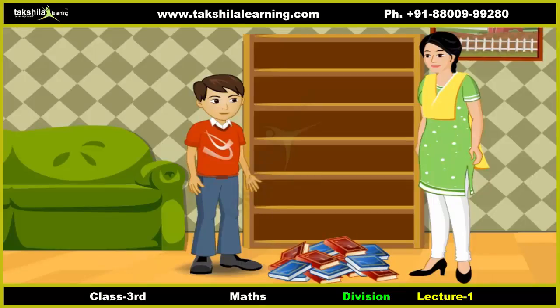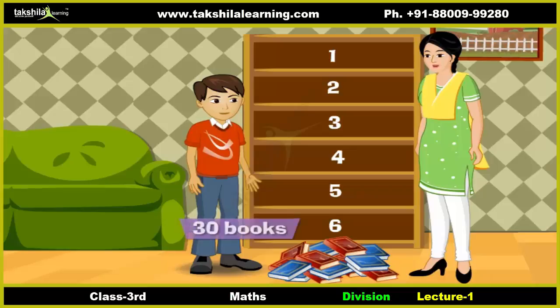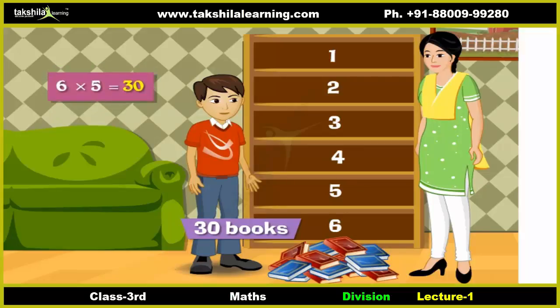Look at this bookshelf. There are six sections in the bookshelf. Ram's mother asked him to arrange 30 books in the shelf with each section containing an equal number of books. How is Ram going to do the work? It is easy if Ram knew division. He has 30 books and six sections, so each section will have five books.